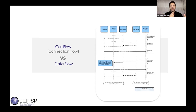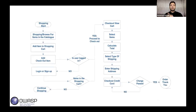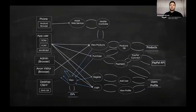A connection flow helps you understand the request-response sequence for specific functions. Penetration testers often quickly draw a connection flow during testing to identify vulnerabilities. A logical flow — showing the logical steps for a specific function — is another useful option, especially for identifying logical threats in the threat identification phase.